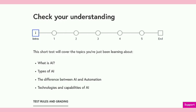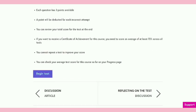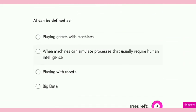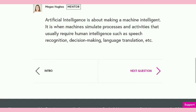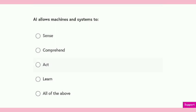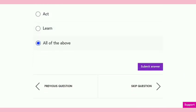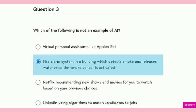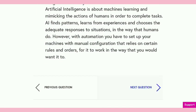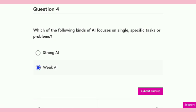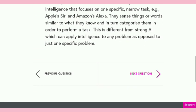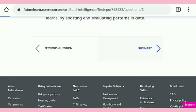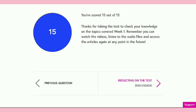You reach the Check Your Understanding at 1.21 and here we are going to start this test. These are easy questions — for example, AI can be defined as... Go through the course contents and you can easily answer any questions, because all the answers are in the contents. The third question is also very easy. There are five questions total. Strong AI or weak AI — it is weak AI. The next question is true or false — it is a false statement. We got all questions correct and completed with 15 out of 15 marks.